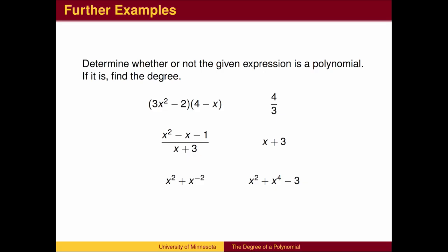4 thirds is a polynomial. It is a real number, therefore a constant. Since there are no terms with x, the degree is 0.